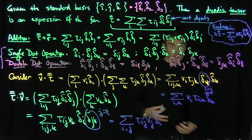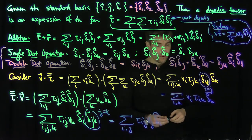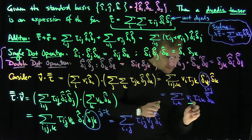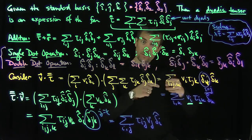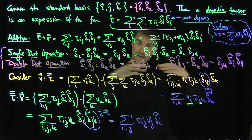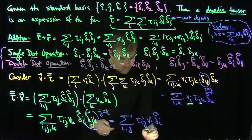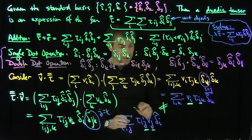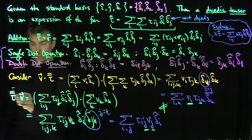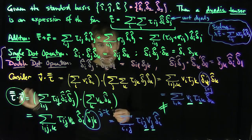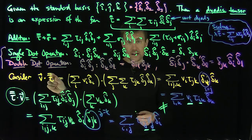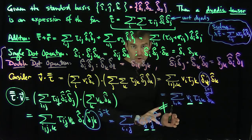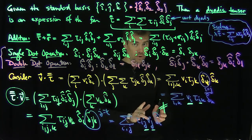These two expressions look similar, but the important difference is where we are summing. In v dot tau we sum the v_i coefficients over the rows of the dyadic tensor representation; in tau dot v we sum v over the columns. So these expressions are not equal — the order in which you do a dyadic tensor dot a vector matters.